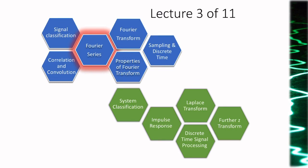So where are we? We're now in week three. We've finished talking about signal classification, correlation, convolution, and the elementary functions — the unit impulse, ramp, and step. This is our first step into the world of the Fourier transform, or the frequency domain. We're going to spend a week on the Fourier series, a week on the Fourier transform, and then a week on the properties of the Fourier transform — so three weeks talking about Fourier.